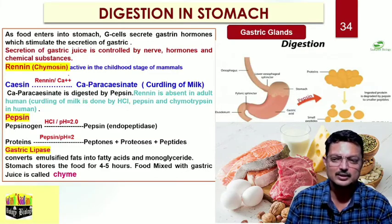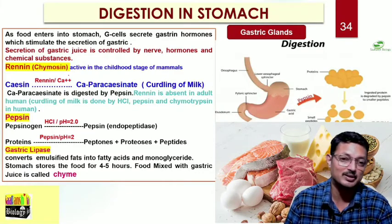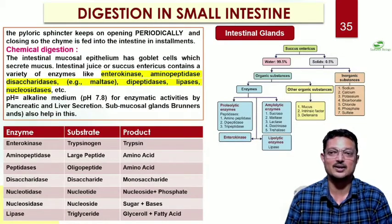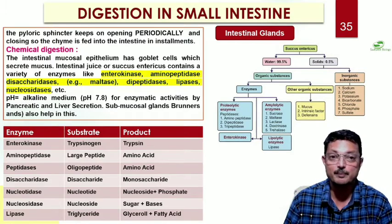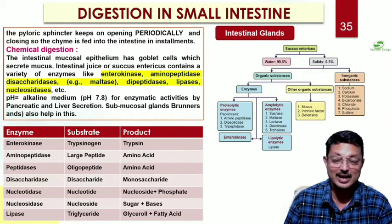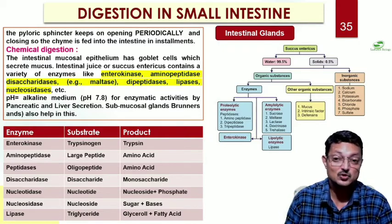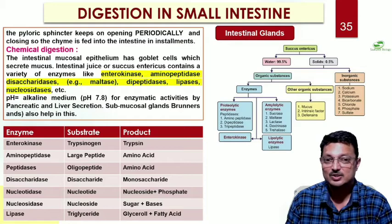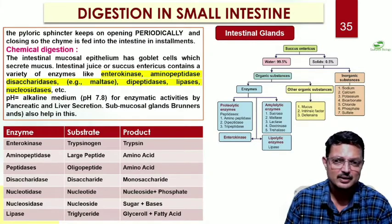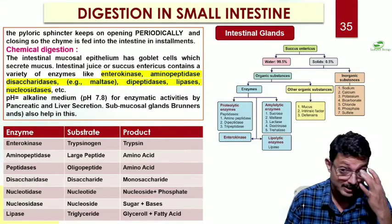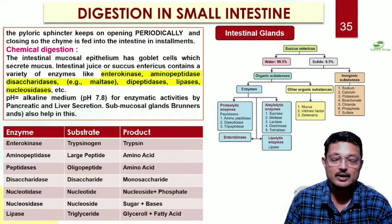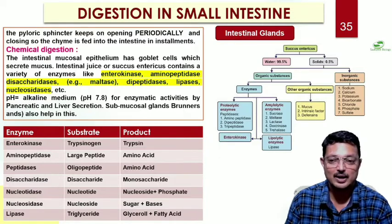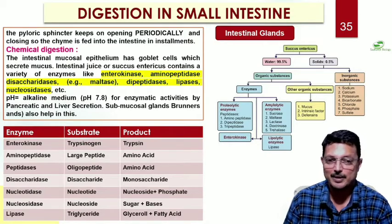Then comes the small intestine. The food from the stomach has a pH of around 2 - very acidic - and it now needs to go to a place where the pH is basic. In the small intestine, specifically in the first part - the duodenum - there are secretions from the liver, secretions from the pancreas, and secretions from the intestinal glands. The focus is on converting the pH from acidic to basic. Some enzymes released include enterokinase, amino peptidases, peptidases, disaccharidases, and nucleotidases.